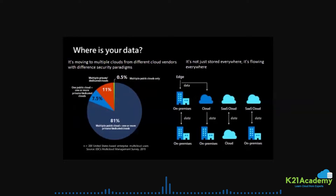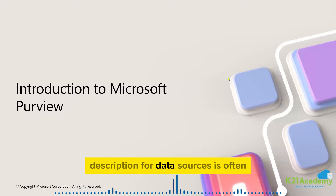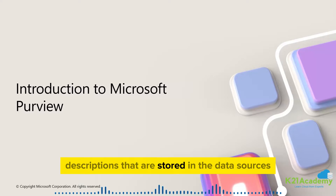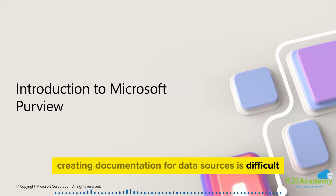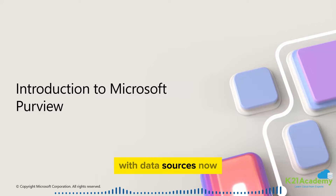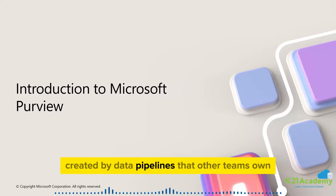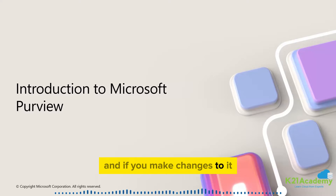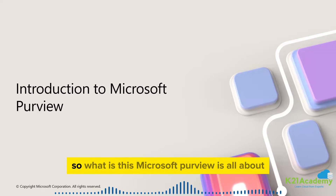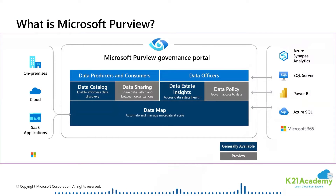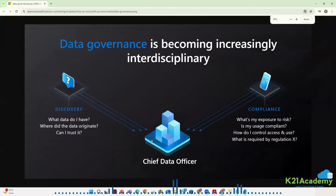Within the Purview approach, writing metadata descriptions for data sources is often considered a wasted effort, because client applications typically ignore descriptions stored in data sources. Creating documentation for data sources is difficult because we need to keep documentation in sync with data sources. Without the ability to track data end to end, you must spend time tracing problems created by data pipelines that other teams own, and changes you make can accidentally affect related reports or business processes. So what is Microsoft Purview all about? Let's look at the concept of data governance.